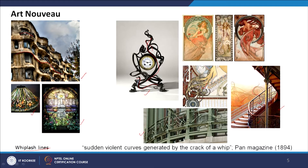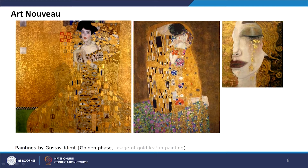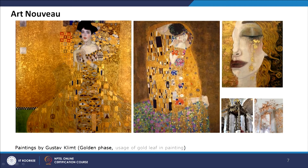Gustav Klimt's work is also categorized as Art Nouveau, though here we do not see much whiplash line. Instead, he used gold leaf within the painting, creating a very ornate decoration that is somewhat more geometric than biomorphic. This usage of gold leaf within painting can be compared to the Baroque and Rococo style, which also featured golden decoration on walls and roofs, and Klimt similarly used that color palette.